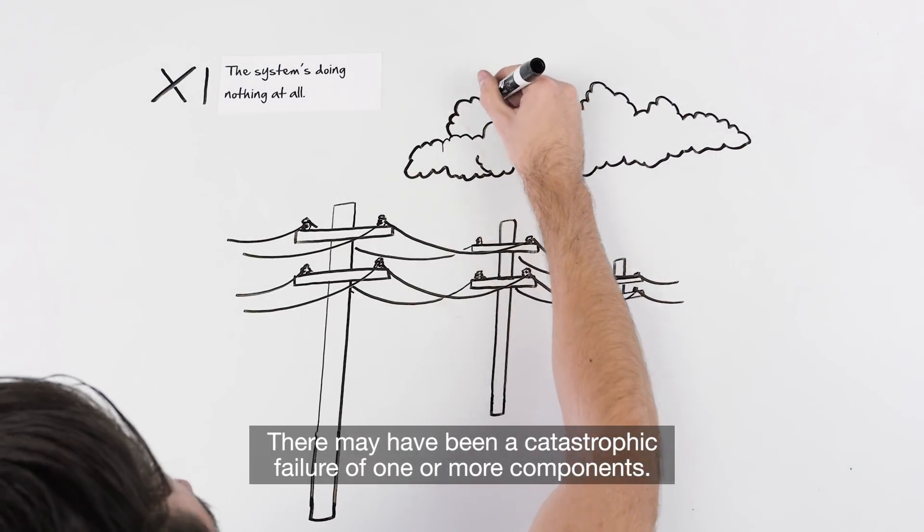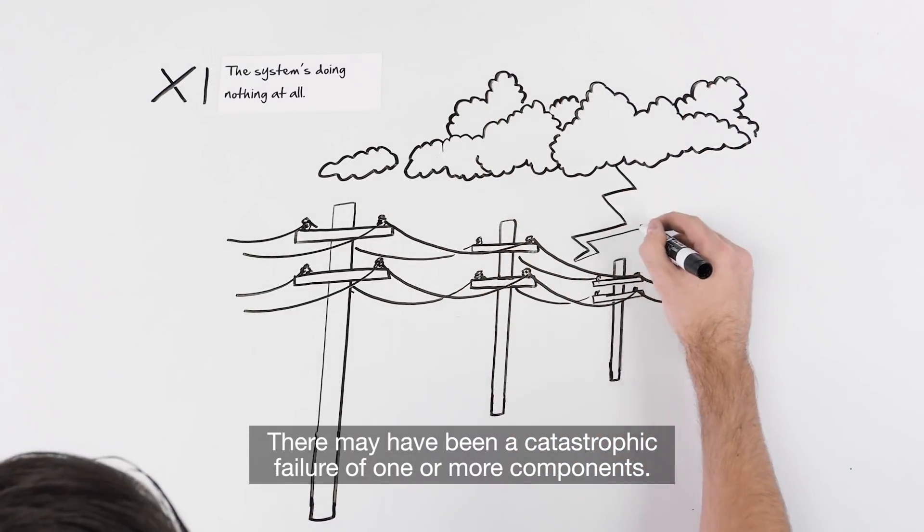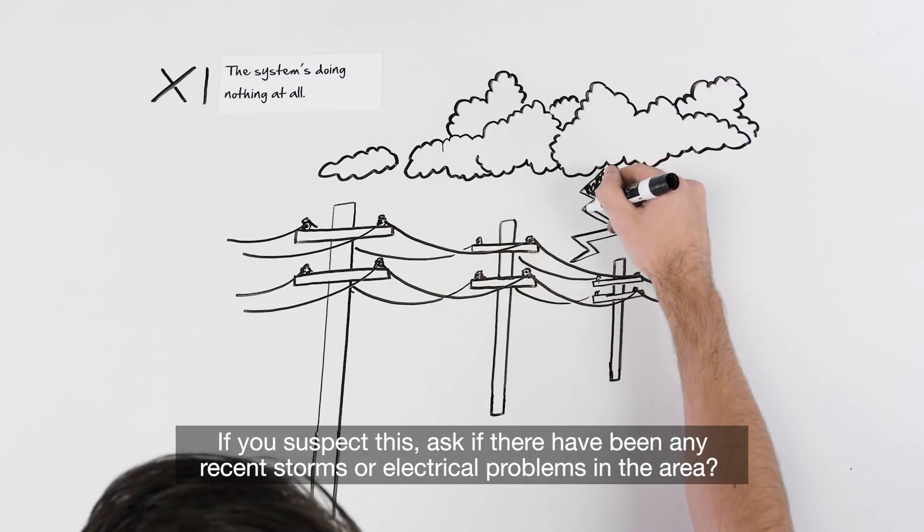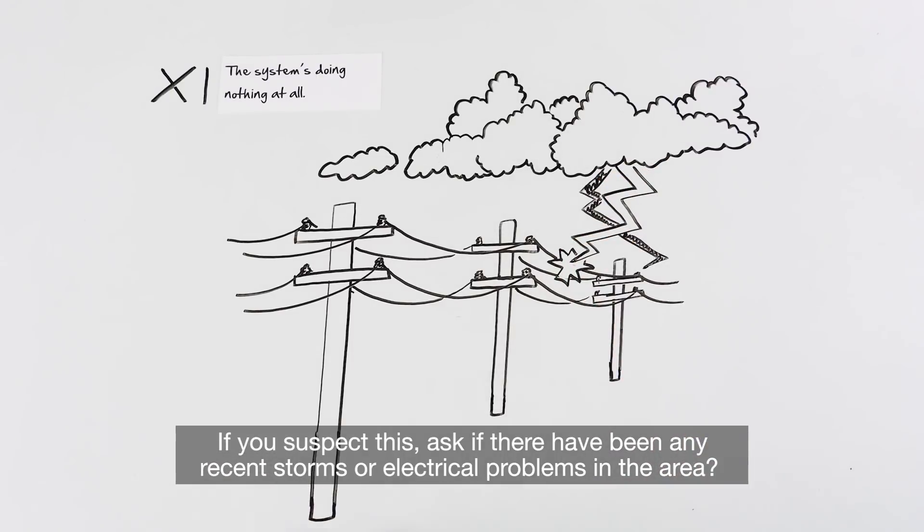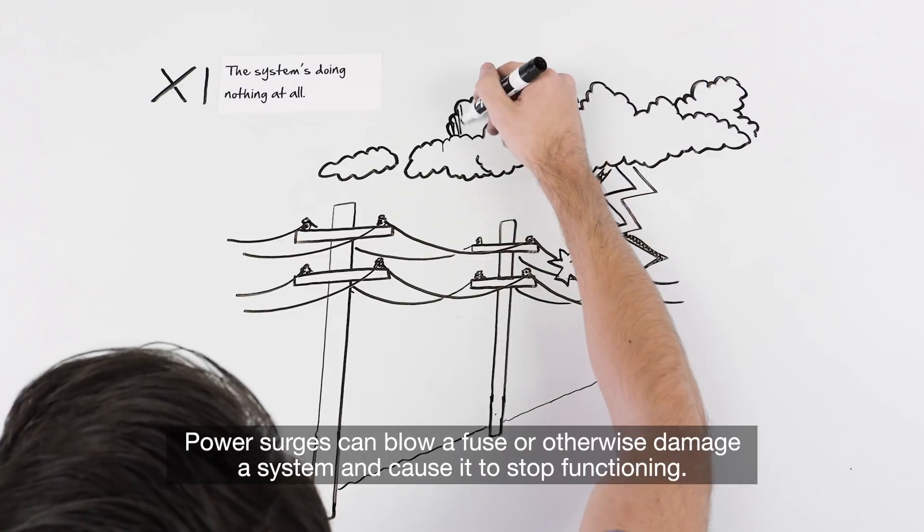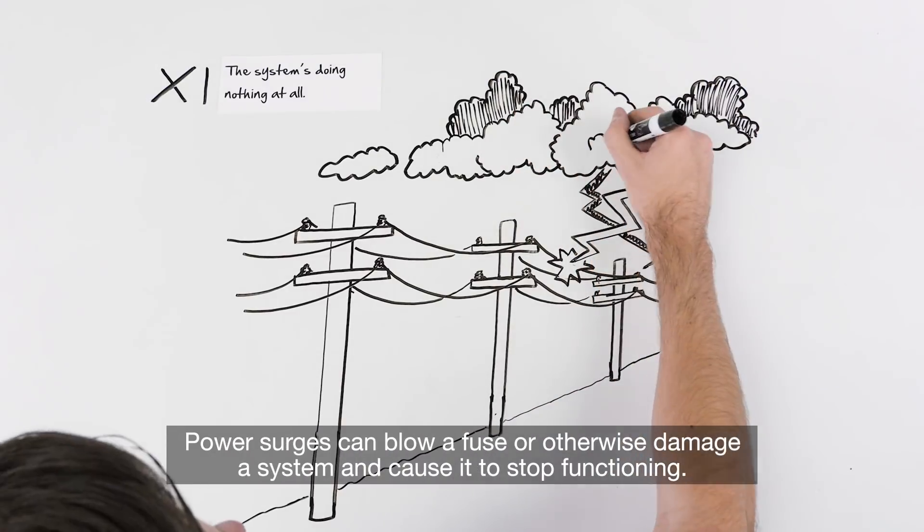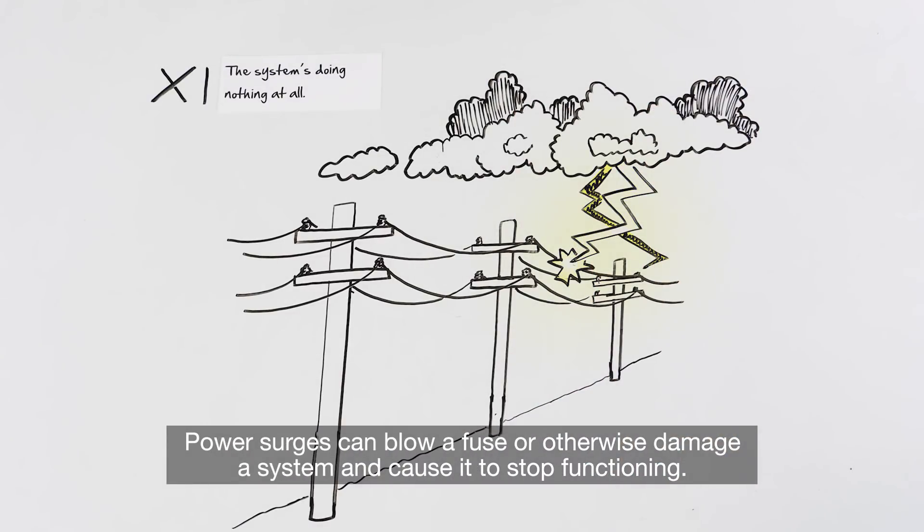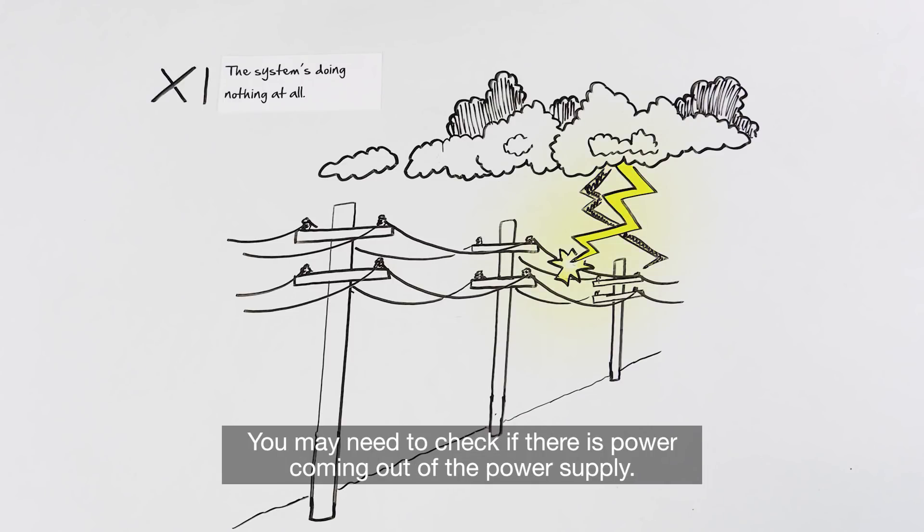There may have been a catastrophic failure of one or more components. If you suspect this, ask if there have been any recent storms or electrical problems in the area. Power surges can blow a fuse or otherwise damage a system and cause it to stop functioning. You may need to check if there is power coming out of the power supply.